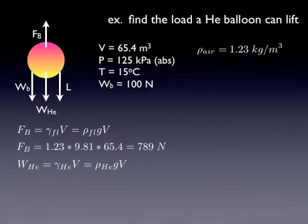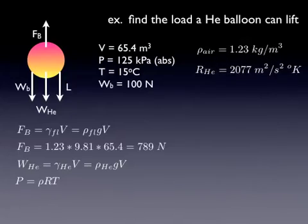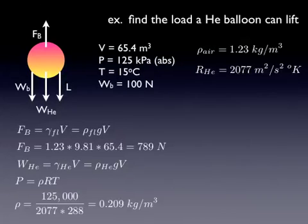The weight of the helium is a little more complicated. It's gamma of the helium times the volume of the balloon. Gamma is rho times g. Now, I didn't give you the density of the helium, but I did give you the pressure and the temperature. So we have to go all the way back to chapter one and think about the ideal gas law again. If we know the pressure and temperature, we can calculate the density of the gas. We need to look up the gas constant for helium. That's also in the front cover of your textbook. And then we rearrange the formula and we can solve for rho. Remember, with the ideal gas law, there's a couple tricks. One is you have to make sure you're using absolute pressure, which is what you were given, but there was a kilo, so you have to add a thousand to it. And you also have to use temperature in degrees Kelvin. So 15 degrees Celsius, you have to convert that to Kelvin before you can plug it in.